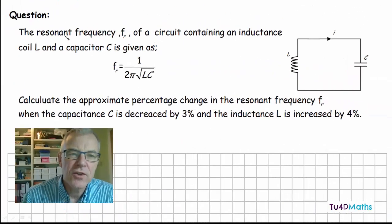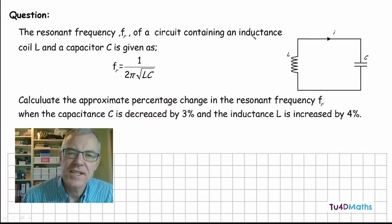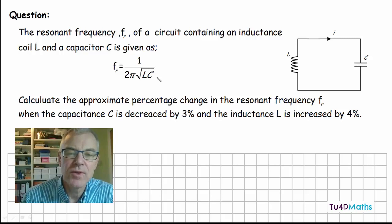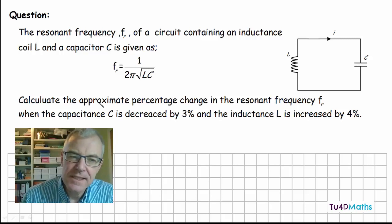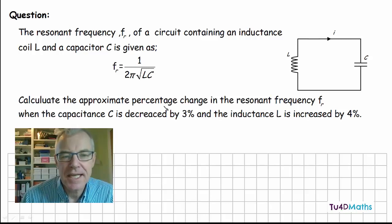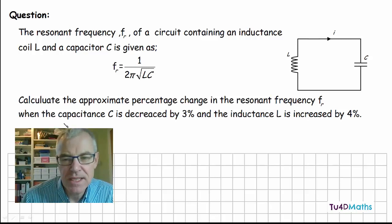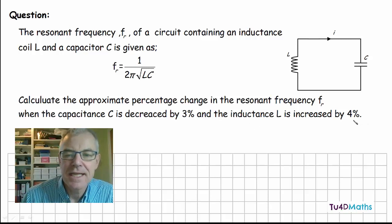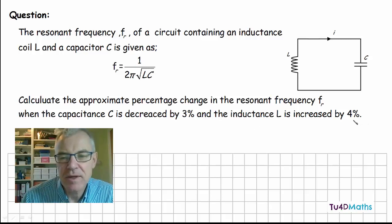In this question we're told that the resonant frequency of a circuit containing an inductance coil L and capacitor C is given as 1 over 2π√(LC). We're asked to calculate the approximate percentage change in the resonant frequency when the capacitor C is decreased by 3% and the inductance L is increased by 4%.